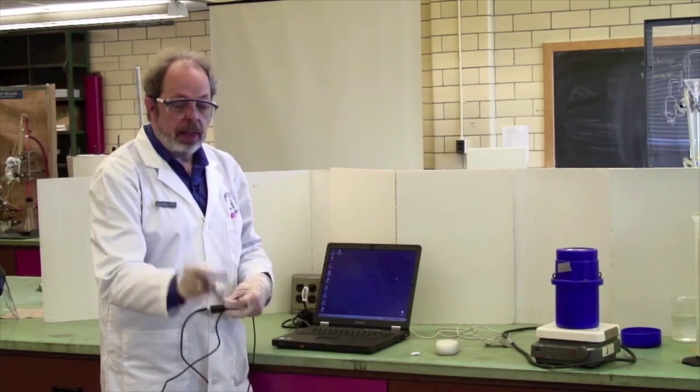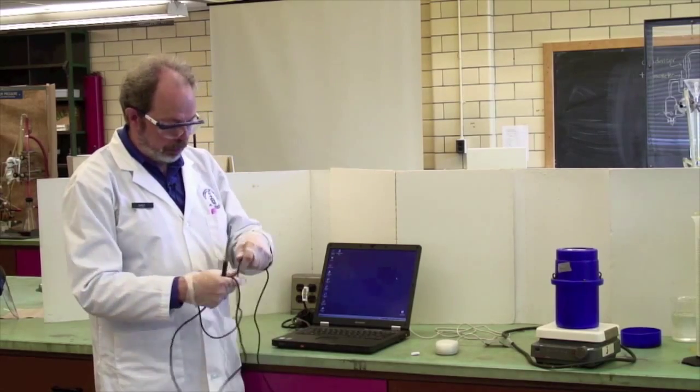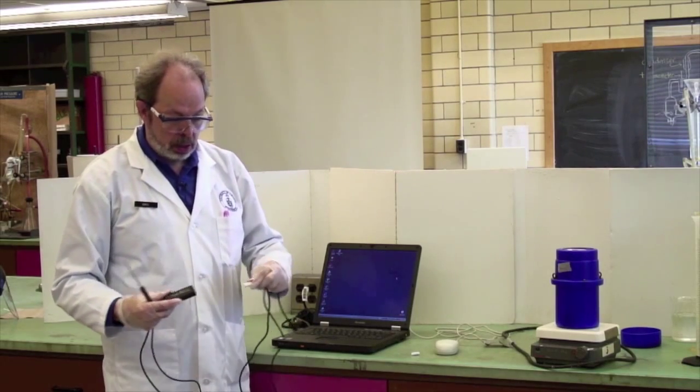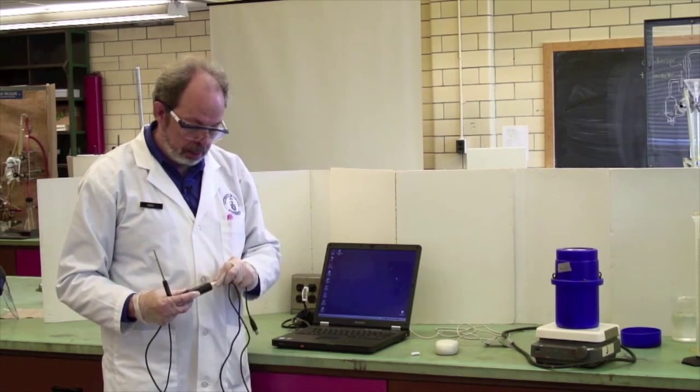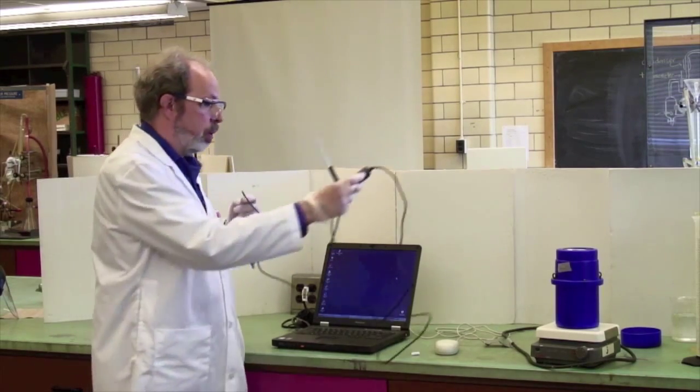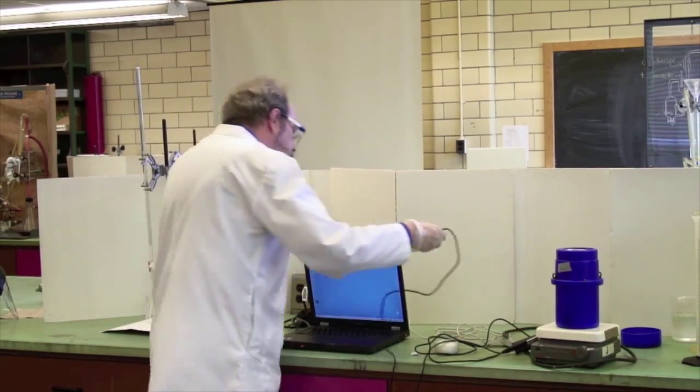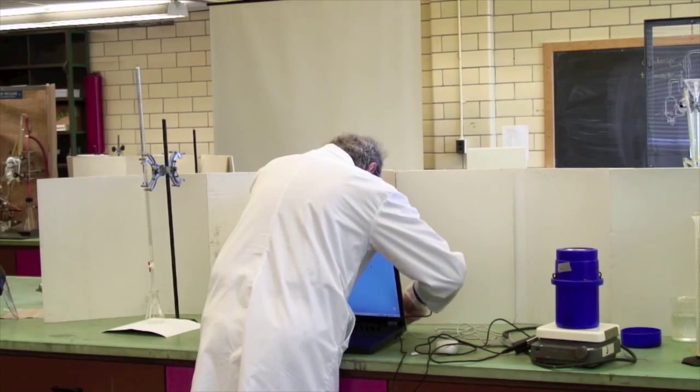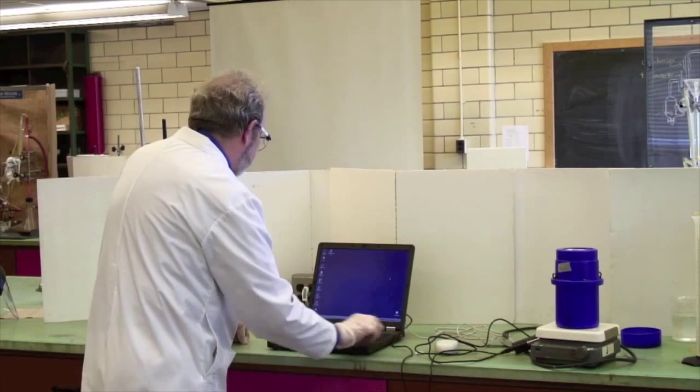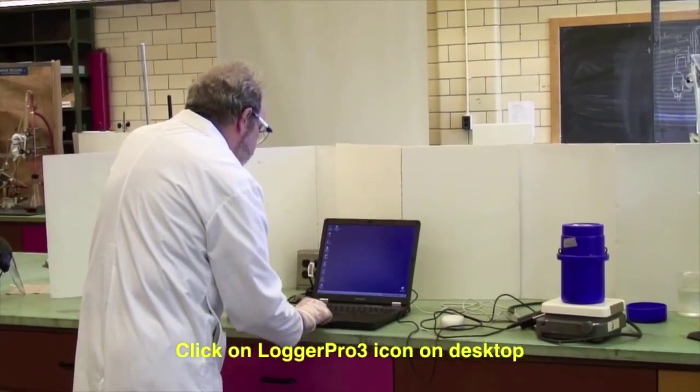This is a thermocouple which will be placed inside the calorimeter. And it goes through this box, which is technically called a Go-Link, which disconnects there. And we have here a USB port key, which actually fits in the back of the laptop. There we go. It's now recognized. And you are looking for Logger Pro 3.6.